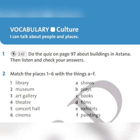The second task is exercise number 2. You must match the places 1 to 6 with the things A to F. For example, library — books.